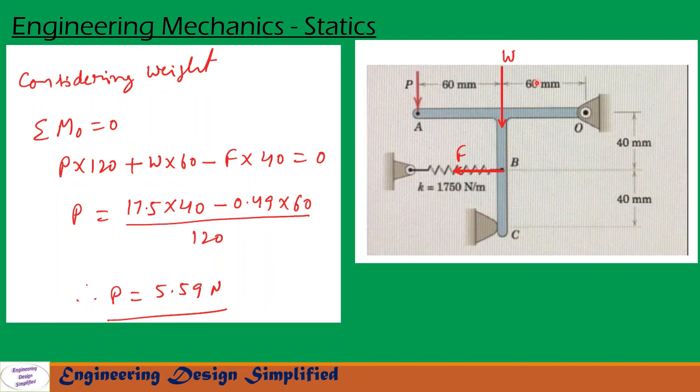W is acting at a distance 60 mm from O and P is acting at a distance 60 plus 60, 120 mm from O. Now let us take moments about O due to all these three forces. In this case, case one, we are considering weight. So moments about O: ΣMo equals zero.